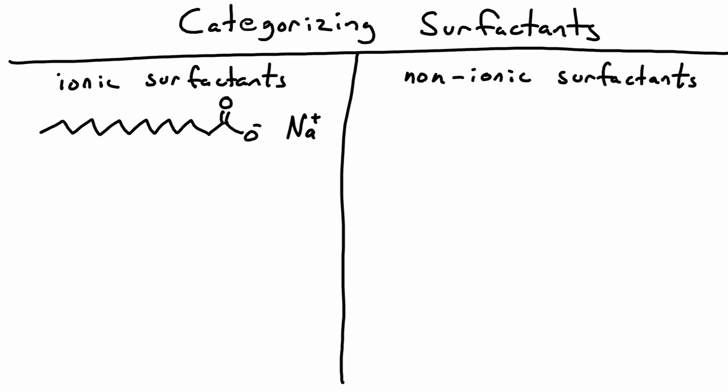The first surfactant synthesized by humans would be a soap. A soap is just a long-chain carboxylic acid, which is cleaved from fat or oil using a base. People used to synthesize these by leaching water through wood ashes. The resulting sodium or potassium salt is an ionic surfactant.